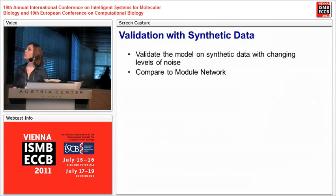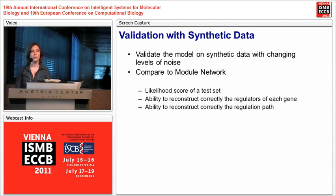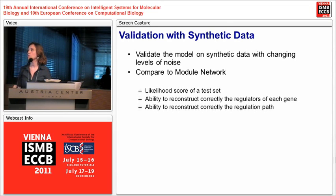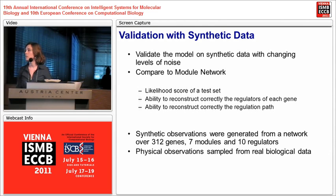We validated our model using synthetic data with changing levels of noise, comparing performance to the module network by measuring the likelihood score on a test set, the ability to reconstruct true regulators for each gene, and the ability to reconstruct regulation pathways. We used synthetic gene expression sampled from a network defined over 300 genes, 7 modules, and 10 regulators, with physical observations sampled from real biological data covering almost half of the real biological network.